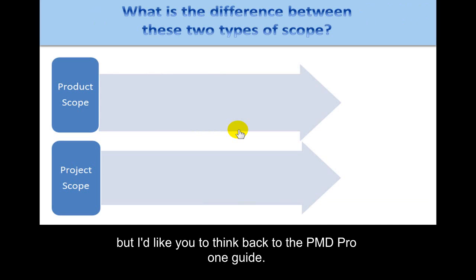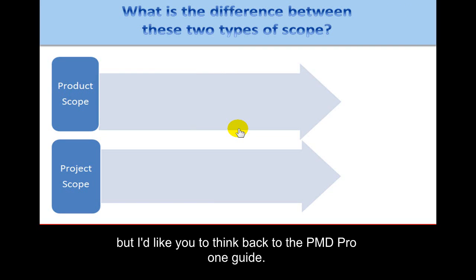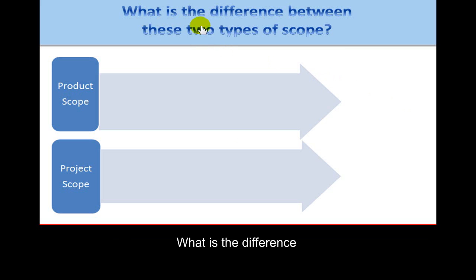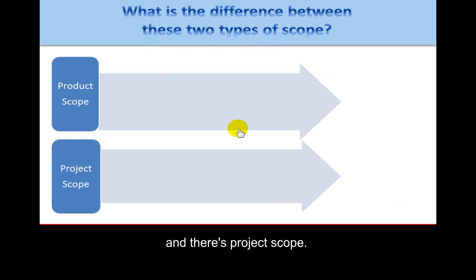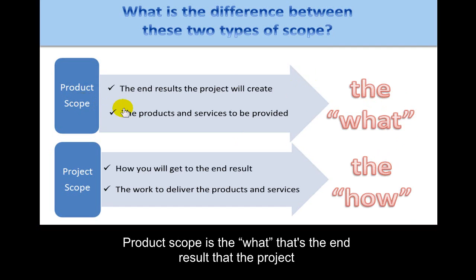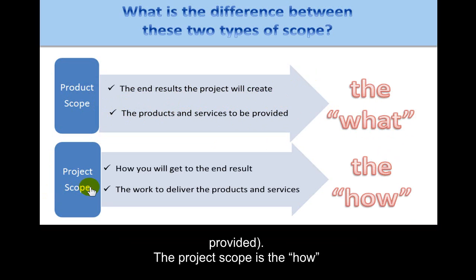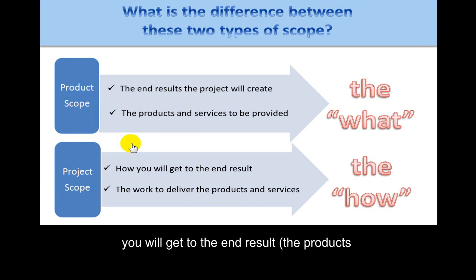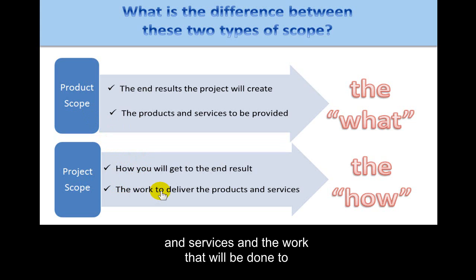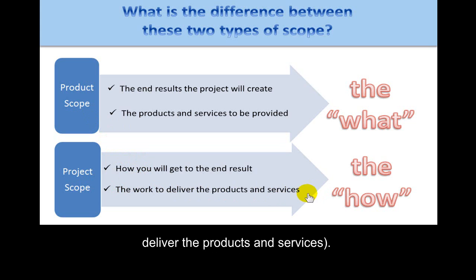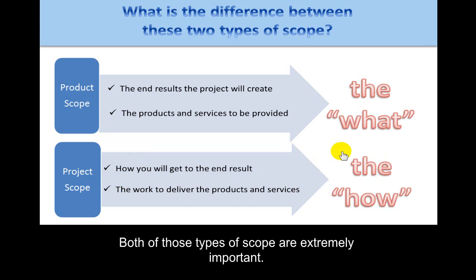Thinking back to the PMD Pro 1 guide, what is the difference between the two types of scope? There's product scope and project scope. Product scope is the 'what' — the end result the project will create, the products and services to be provided. Project scope is the 'how' — how you will get to the end result, the work that will be done to deliver the products and services. Both types of scope are extremely important.